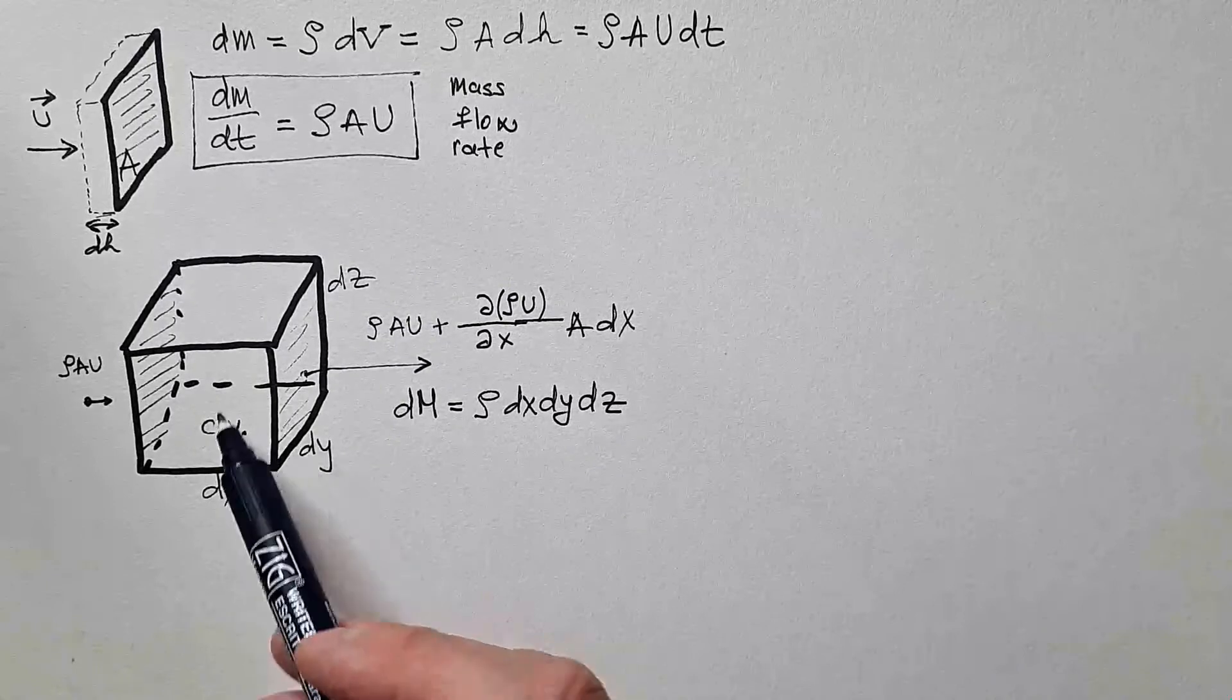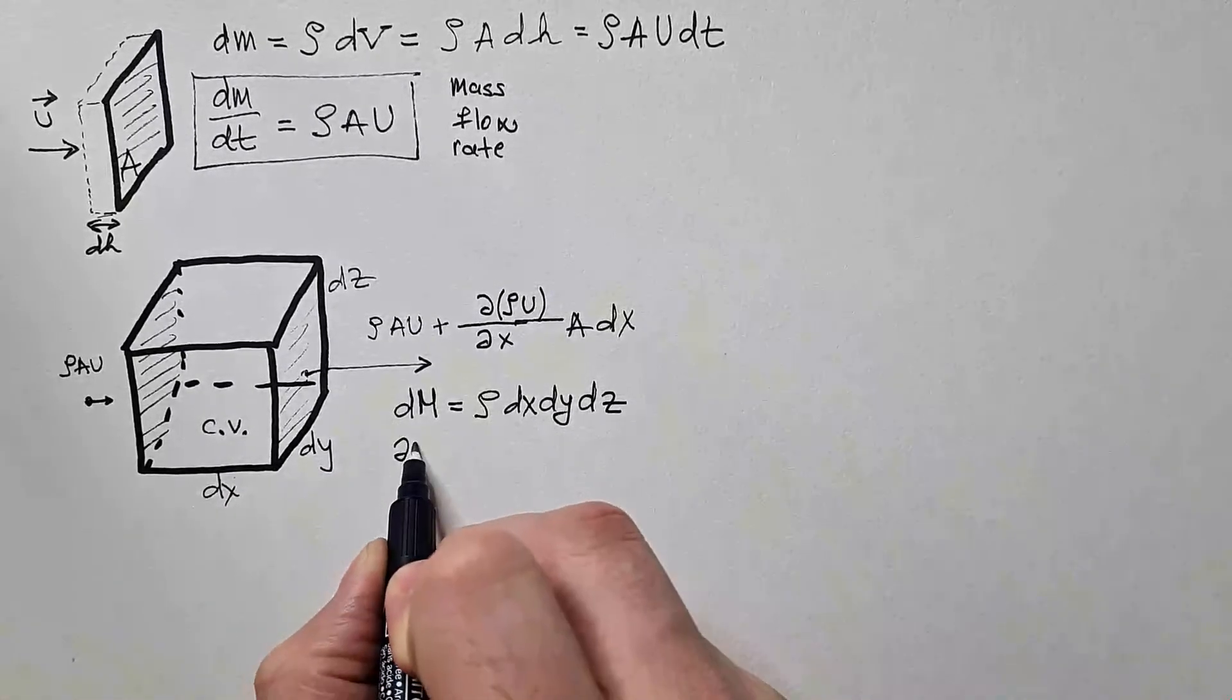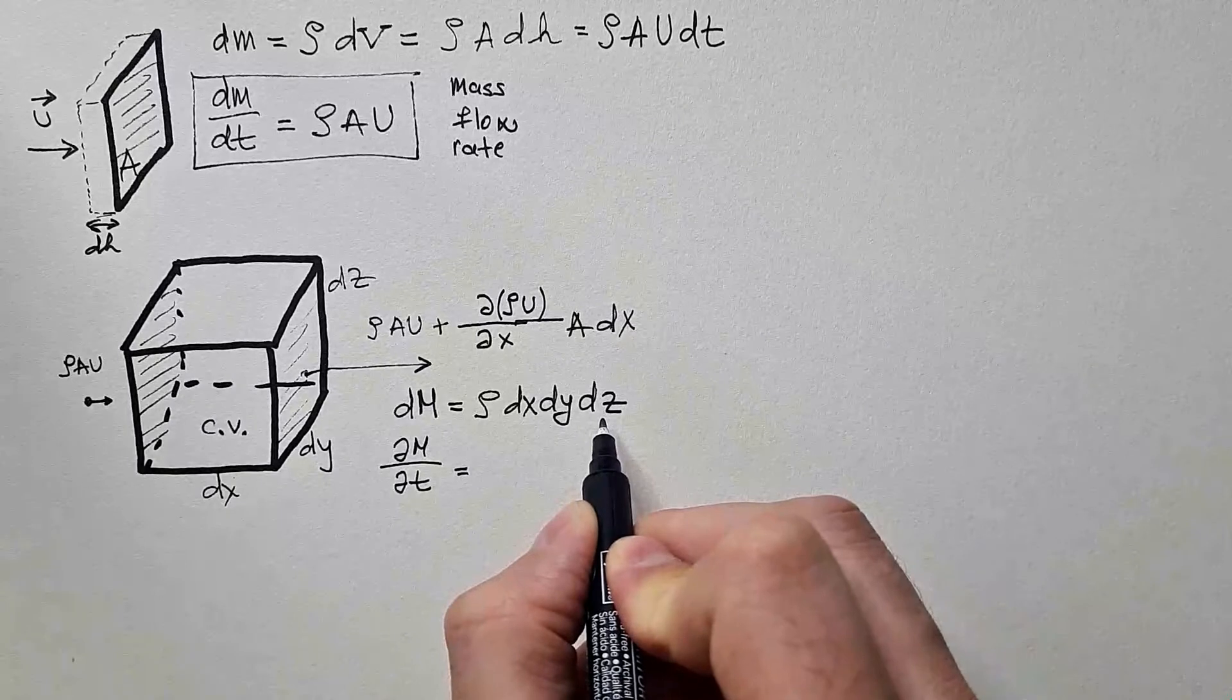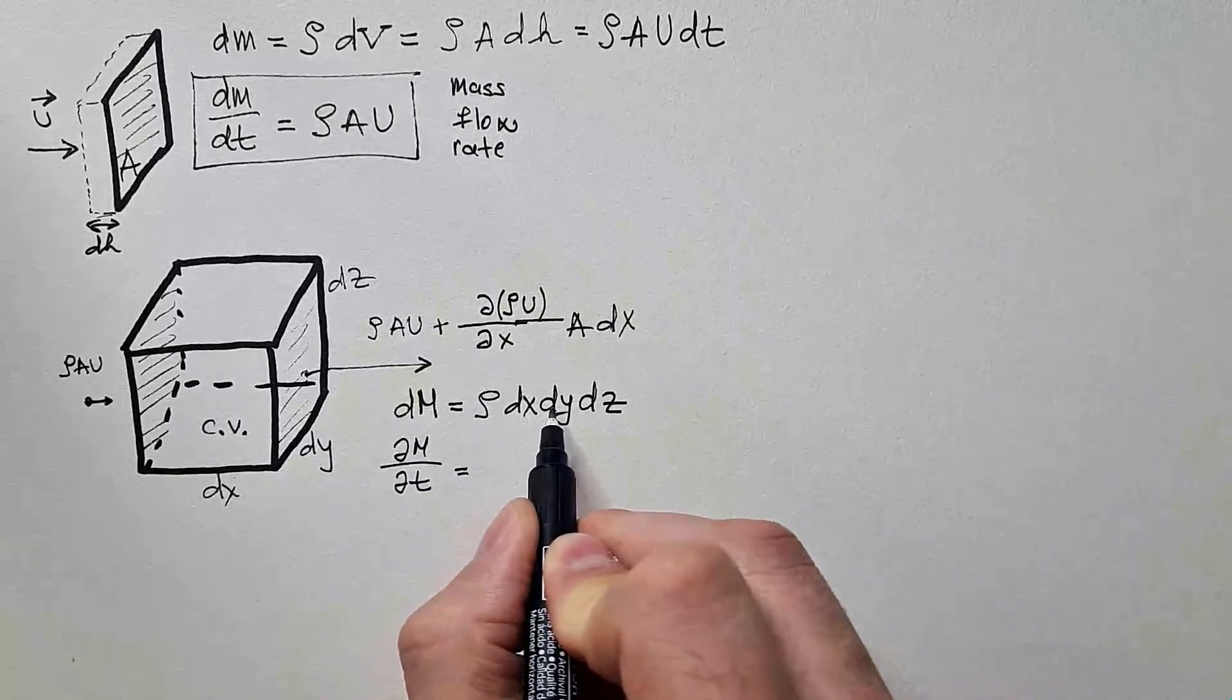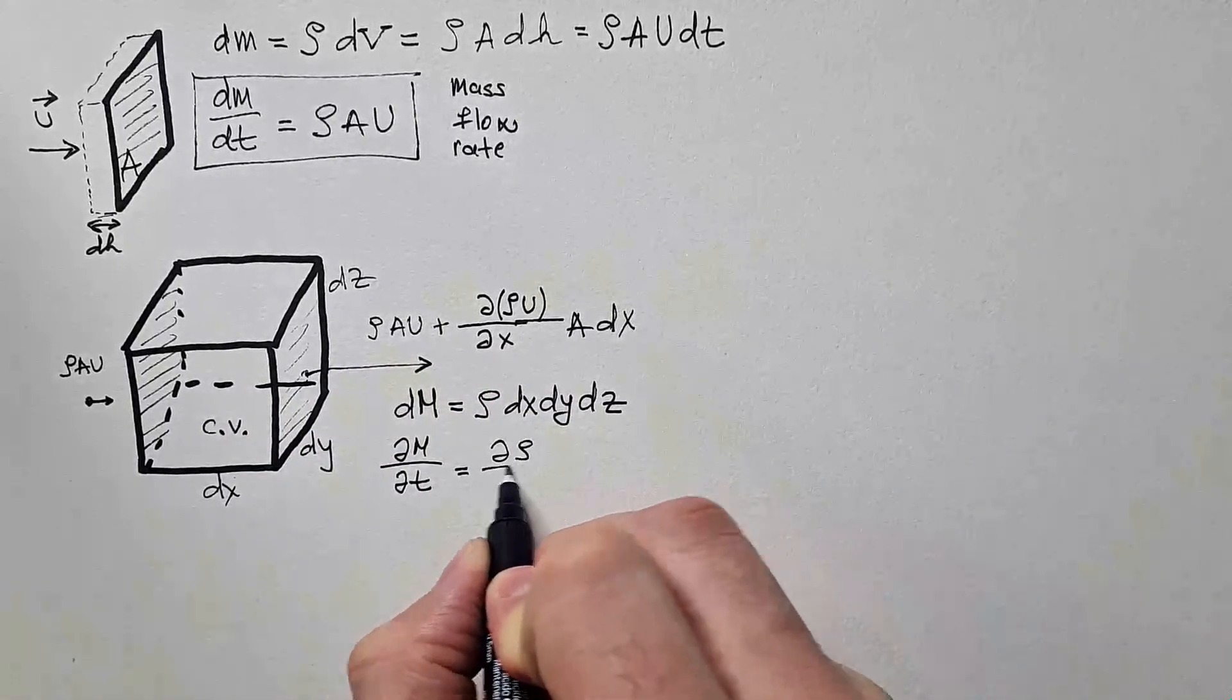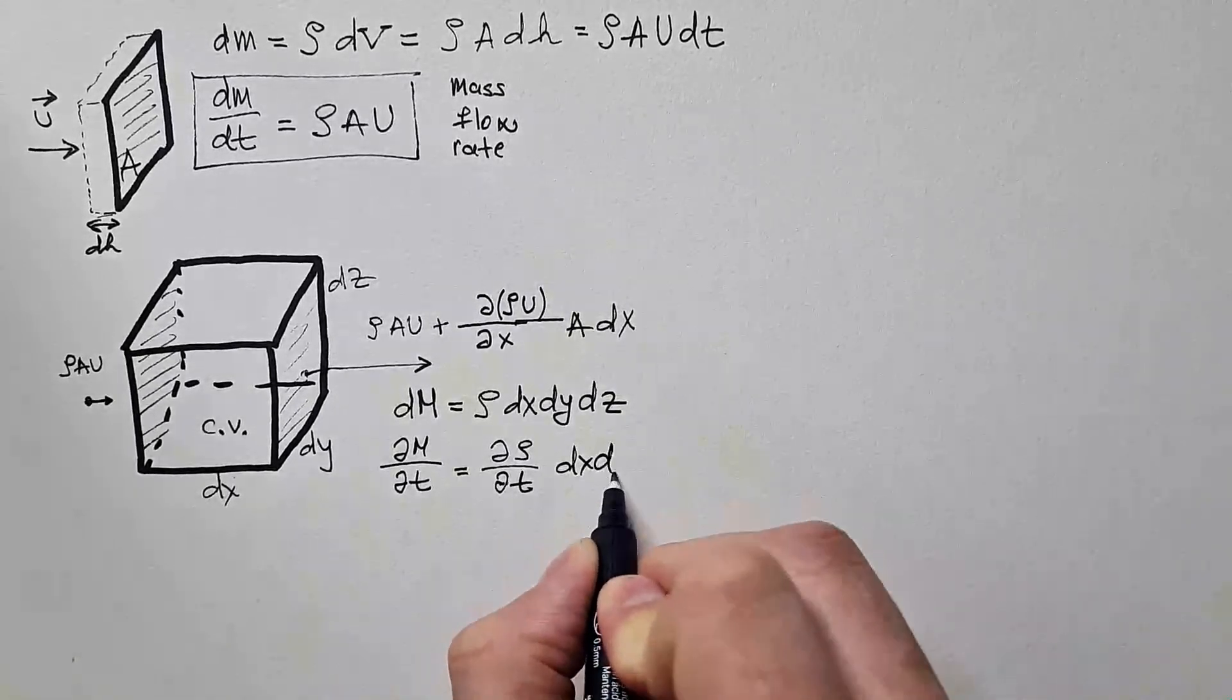Now, we want to find how mass inside control volume changes. So δm/δt is equal. If I differentiate this with respect to time, I will only have differentiation of density because dx, dy, and dz are constant. Control volume is fixed. So δρ/δt, dx, dy, dz.